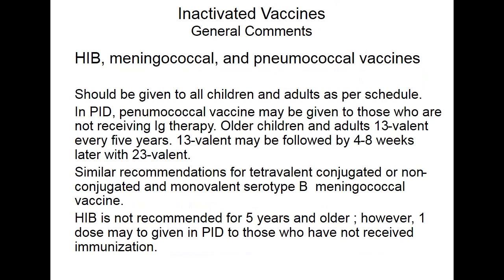Hib, meningococcal, and pneumococcal vaccines should be given to all children per schedule. For pneumococcal vaccine, since patients have impaired immune responses even with milder forms, you can give the equivalent of a booster: first give Prevnar (conjugated pneumococcal vaccine piggybacked on diphtheria protein), followed four to eight weeks later by Pneumovax 23 (a polysaccharide vaccine). Giving Prevnar first primes the immune system. Our patients are impaired and don't make normal immune responses, so this approach is recommended.